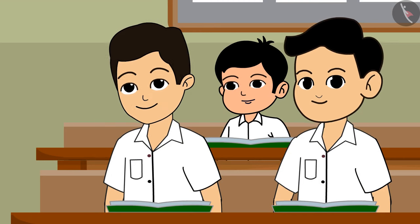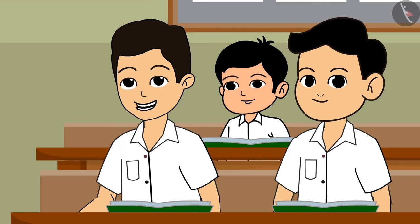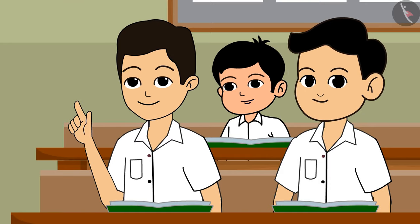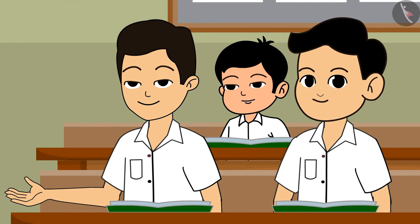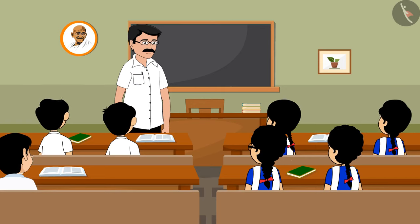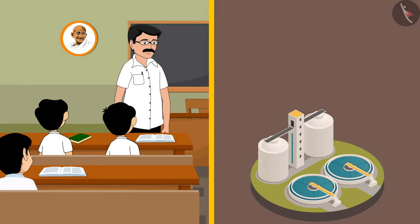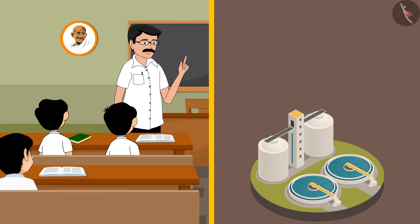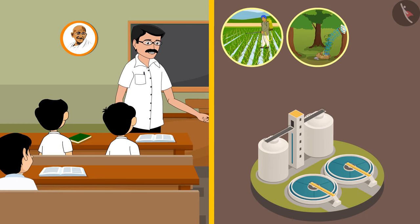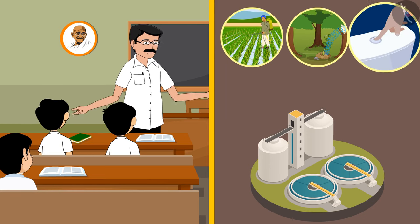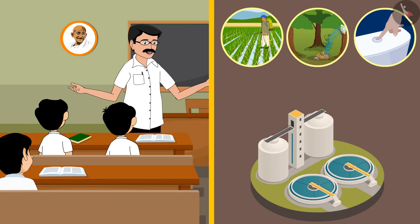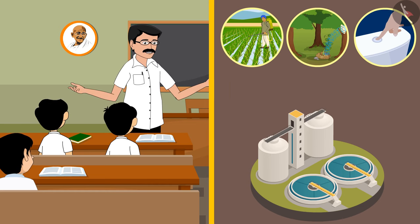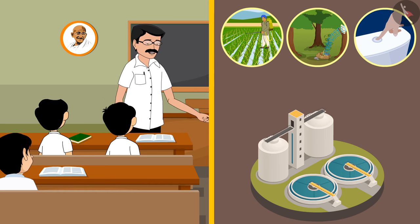Sir, after all these processes, where does this water go? After proper treatment of the contaminated water, it is recycled. It is used in plantation, irrigation, flushing, etc., as per the requirement. All this is from the grey water. Sewage mostly consists of grey water.